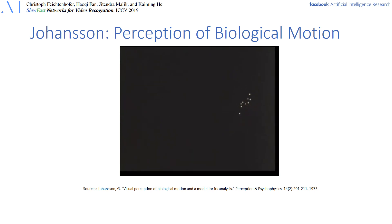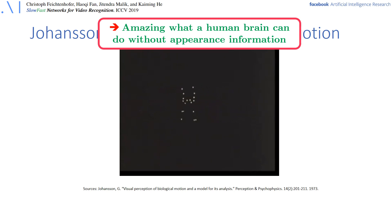Isn't it amazing what our brain is able to do with just motion information? Just a few dots that move in a certain way can give us a very good hint about which action a person is performing. For the human brain, motion is such a rich source of information.